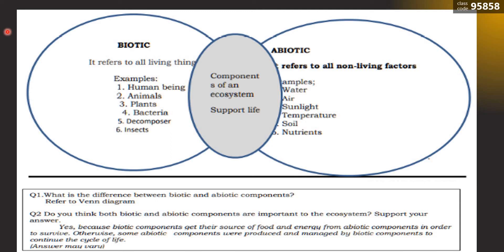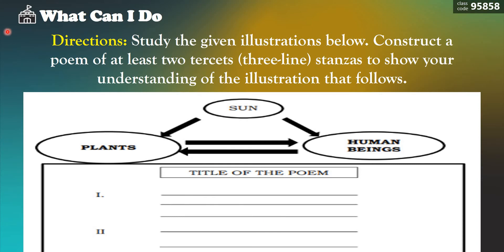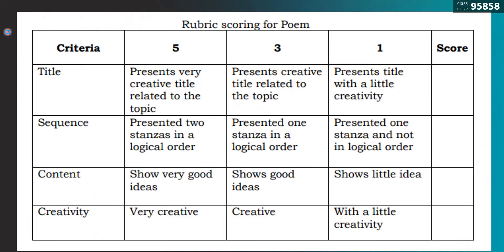What Can I Do: study the given illustrations. Construct a poem of at least two tercets or three-line stanzas to show your understanding of the illustration. This will serve as your assignment for Module 7 Part 2. Subjects include plant, sun, and human being. Here is a rubric with criteria: title, sequence, content, and creativity. Focus on the highest score of five in order to get the highest grade.